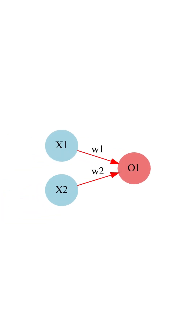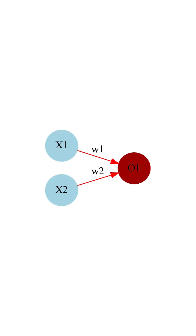This is a diagram of an extremely simple neural network — just two neurons on the input layer and one on the output. The connections between them are weights. In addition, each neuron outside the input layer has a bias parameter. So we have three parameters: two weights and a bias.